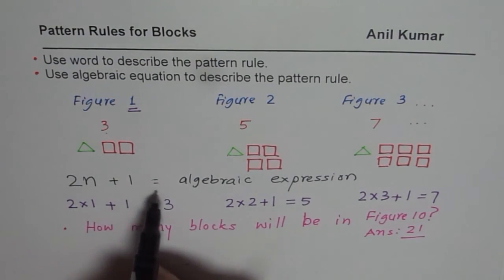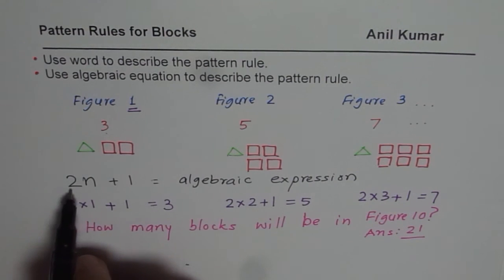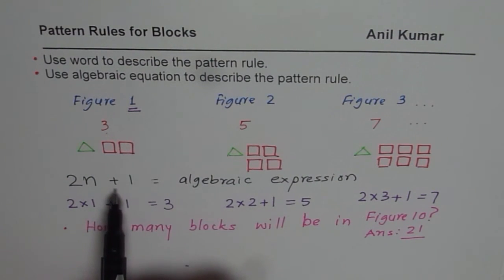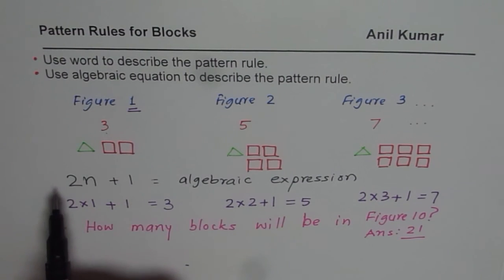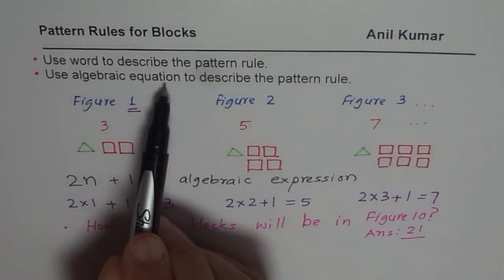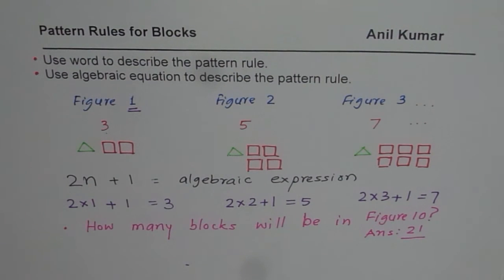If we do not write n equal to sign, it becomes algebraic expression. If I write equal to sign, that is total number of blocks is equal to 2n plus 1, that becomes algebraic equation. So we could use algebraic expression or equation to describe our pattern.